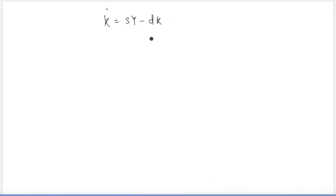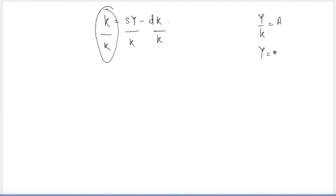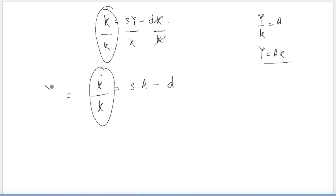To prove this algebraically: start with the capital accumulation equation, then divide both sides by K. The left side becomes K-dot over K, which is the growth rate of capital. On the right side you get s times (Y/K) minus d. From the production function Y equals AK, we know Y/K equals A, so K-dot over K equals sA minus d. Furthermore, since Y equals A times K and A is a constant, the growth rate of Y equals the growth rate of K.